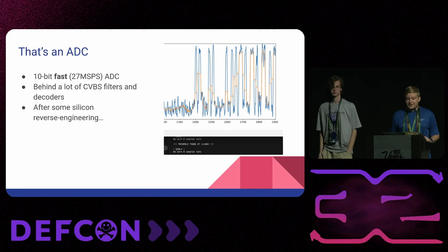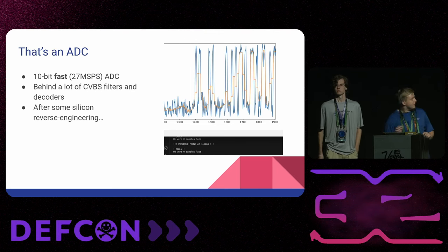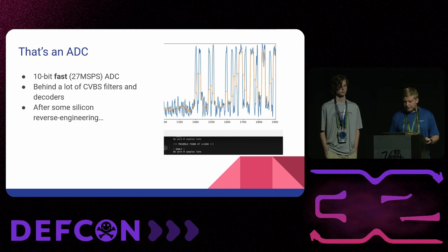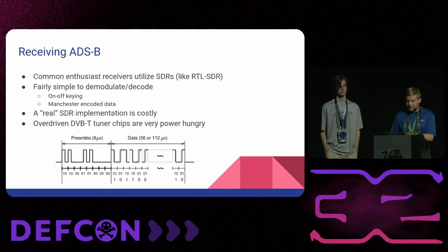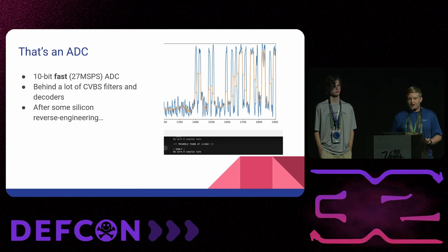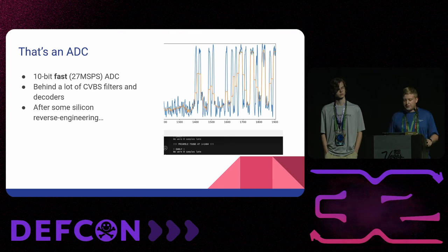We did the reverse engineering, found the registers, and when we put it into test mode — as you can see from the trace pulled from a badge with the RF front end attached — that is the ADSB preamble and the start of a data packet being received as raw samples from the onboard ADC. You can see the preamble pattern, the 1-0-1-1-0-1, and that's exactly what we're seeing on the ADC output. This was our proof of concept: we can do this fully integrated on just the core Linux SoC without any external ADC or SDR chips.